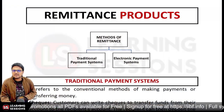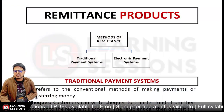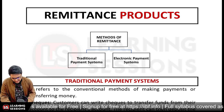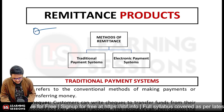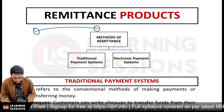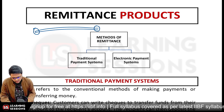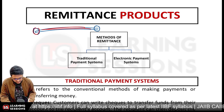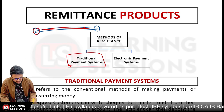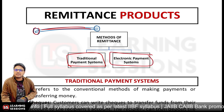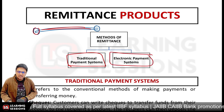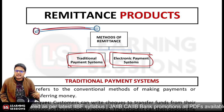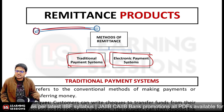Let's start the session on remittance products. When we talk about remittance products, it's related to transferring funds from one user to another. There are two channels available: the traditional payment system and the electronic payment system, which includes ECS, NACH, NEFT, RTGS, etc.